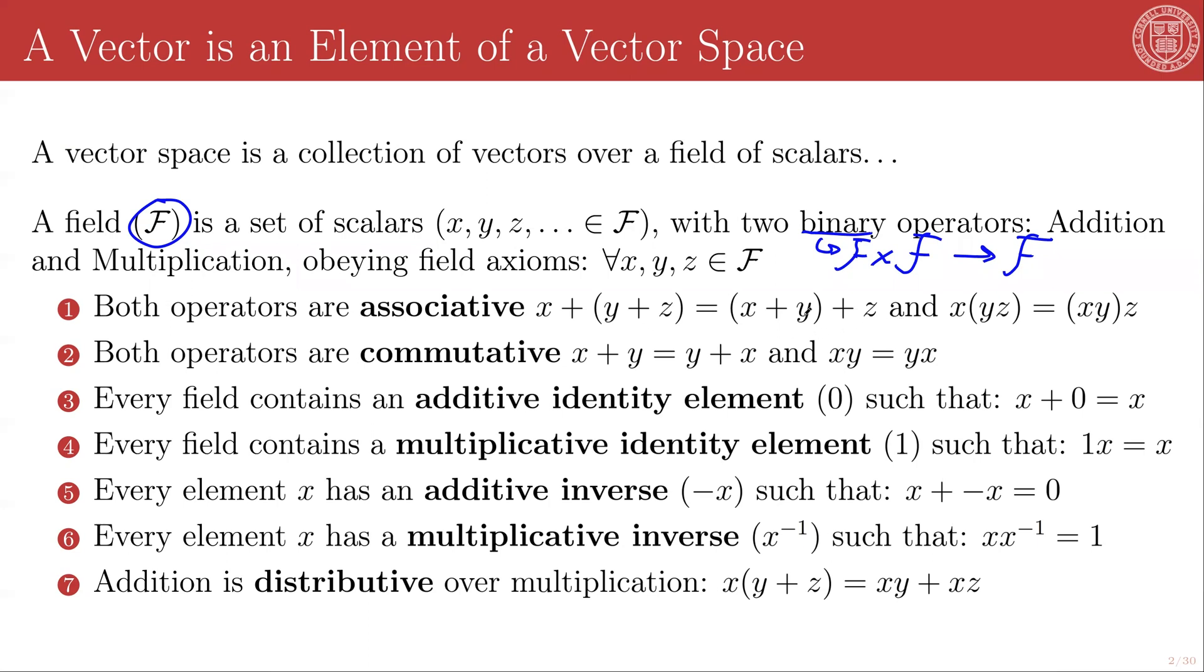And in fact, the real numbers are the field that we will most often be dealing with in this course. The other most commonly used field of numbers in this course will be the complex numbers. So addition and multiplication are both associative. They are also commutative, and so x plus y is the same as y plus x, and product xy is the same as product yx.